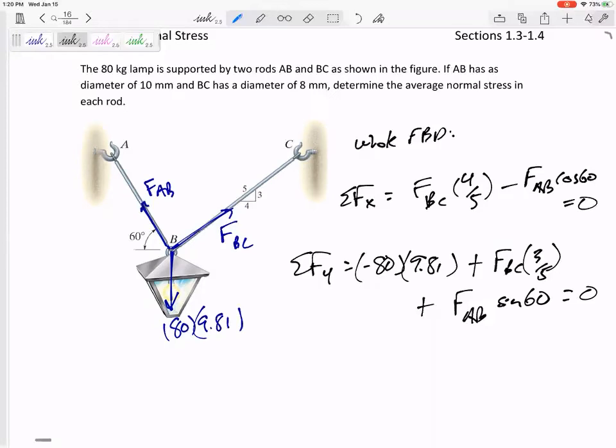Two equations, two unknowns. We're going to have to do statics stuff just to get this. FAB 632.4 newtons, FBC 395.2 newtons.